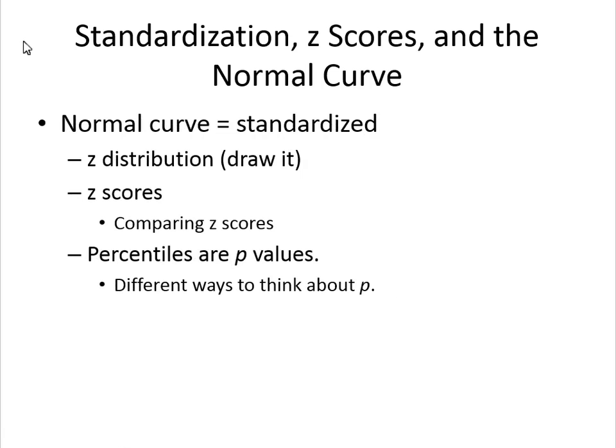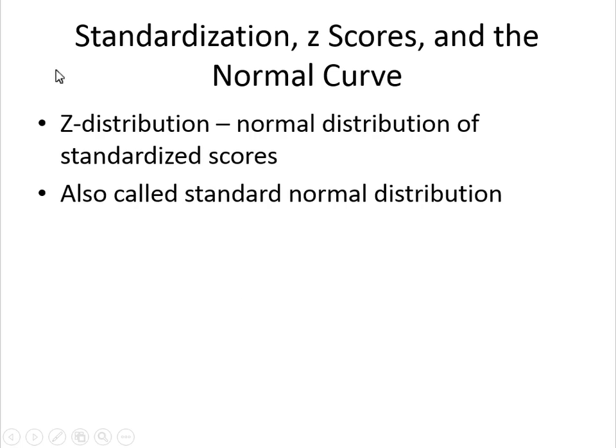It's called the normal curve because it's standardized. We're going to discuss the Z-distribution and its properties, how to calculate Z-scores and compare them, and a lot about percentiles. Think about percentiles not as a special percentage thing — they are p-values. The Z-distribution is the normal distribution of standardized scores, also called the standard normal distribution, also called the bell curve. It is unimodal and symmetric. Statistics has many names for the same thing because it's been approached from multiple perspectives — social sciences, hard sciences, and math.